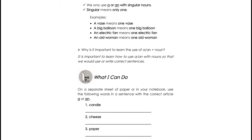What I Can Do. Use the following words in a sentence with a correct article A or AN. Example: Candle — since it starts with a consonant sound, we use A. So let's make a simple sentence using 'a candle.' Example: I have a candle.